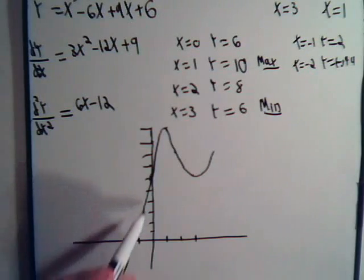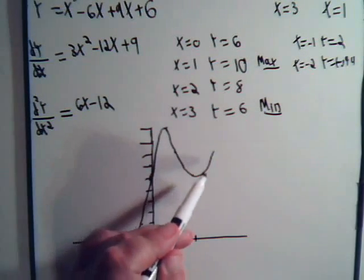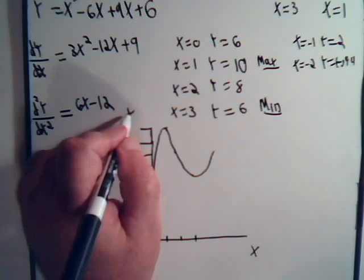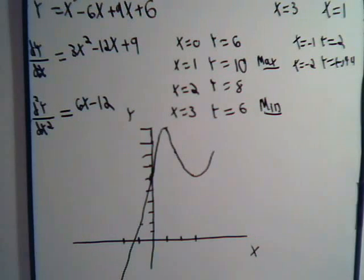So, this roughly then, that would be a rough curve. A rough diagram of what the curve would look like. Of course, this is the x-axis. This is the y-axis. What about this point here?